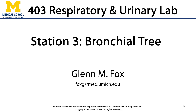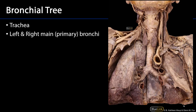Hi! Let's talk about the bronchial tree. The bronchial tree is the conductive pathway, sometimes known as the tracheobronchial tree, which includes the trachea, which sits inferior to the larynx, the primary or main stem bronchi, the secondary bronchi, the tertiary bronchi, and the terminal bronchioles.